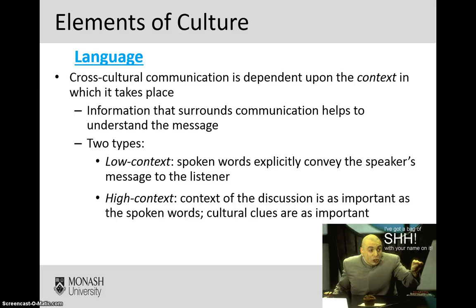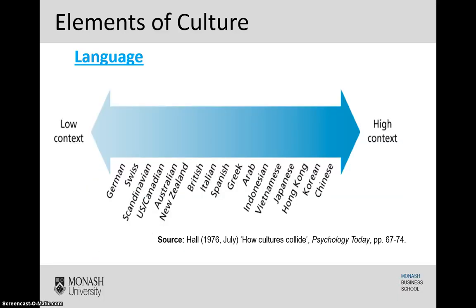Broadly speaking, we see two types of context. Low context, where the spoken words explicitly and clearly convey the speaker's message to the listener. And high context cultures, where the context of the discussion is as important as — or even more so than — the spoken words. To illustrate this, a ranking shows that Australia sits firmly on the low context side, with a fairly direct and blunt communication style, while Chinese culture sits at the other end, where environment and setting play as large a part in determining meaning.